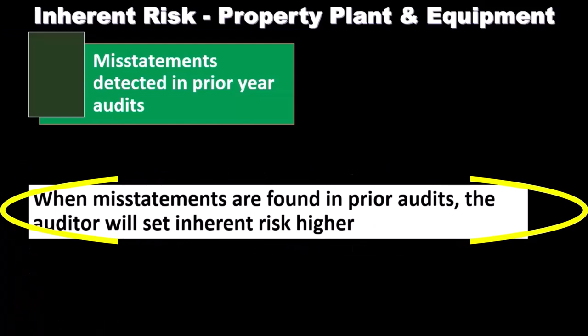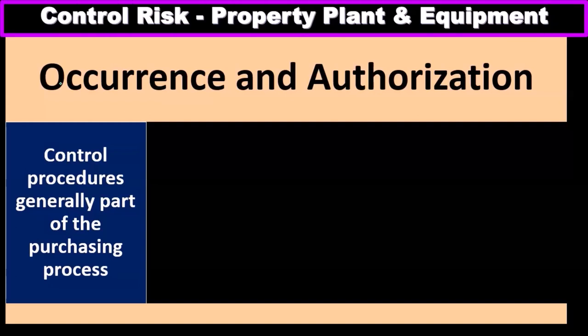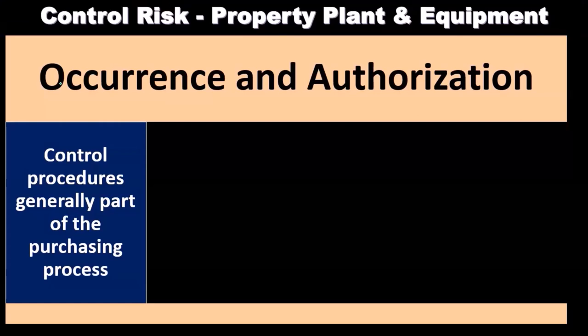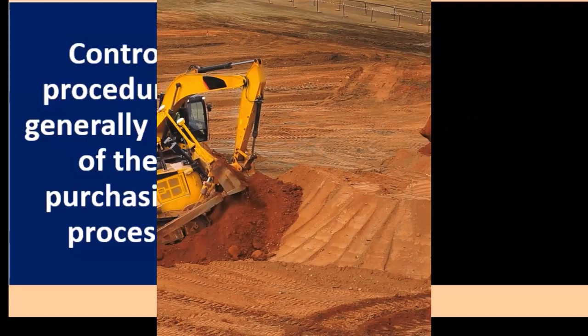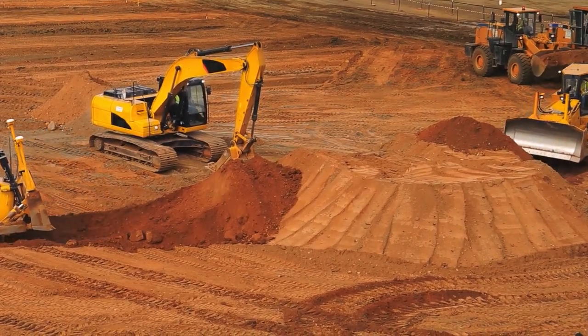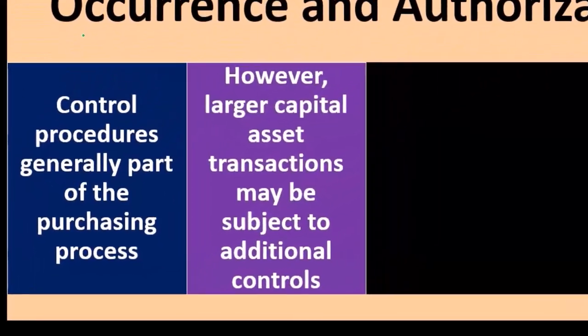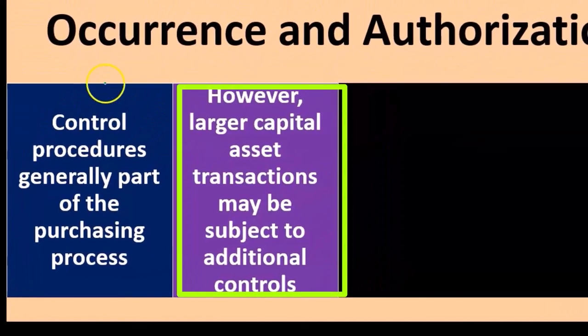Turning to control risk: recall that we consider inherent risk, then control risk, to set detection risk — which determines the amount of testing we'll perform. Control procedures are generally part of the purchasing process. The controls should be much the same for purchasing property, plant, and equipment, particularly regarding the assertion of occurrence and authorization.